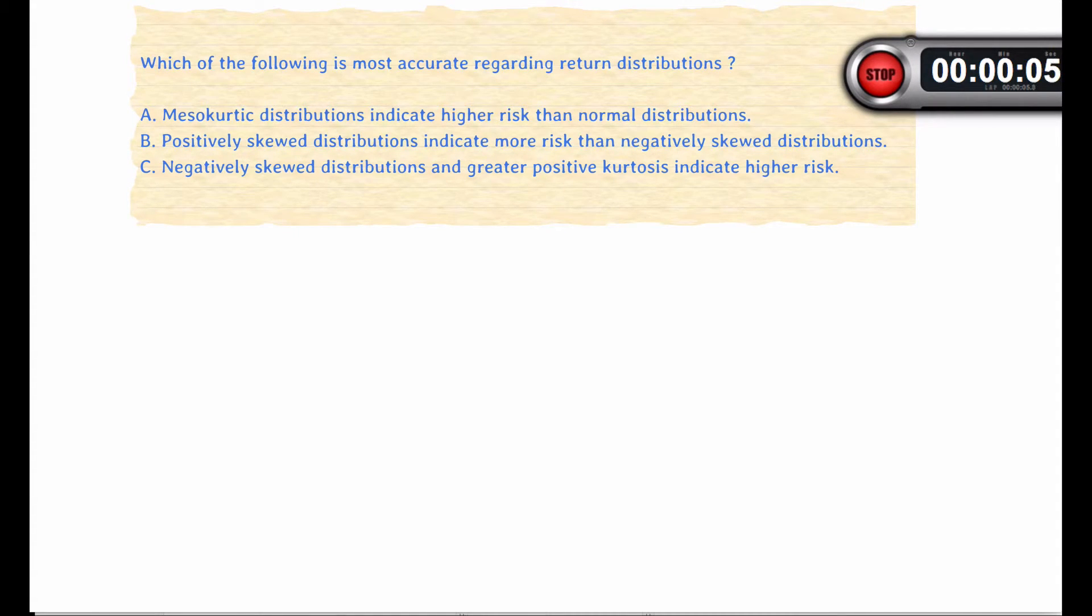So here we have some statements regarding mesokurtic, positively skewed, and negatively skewed distributions and the link of these distributions with risk. So mesokurtic is the same as a normal distribution. A is incorrect in stating that it has higher risk than normal distributions.